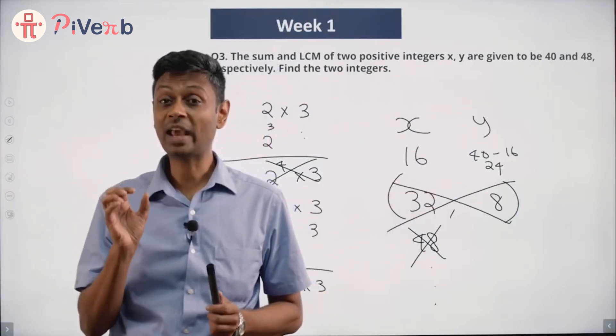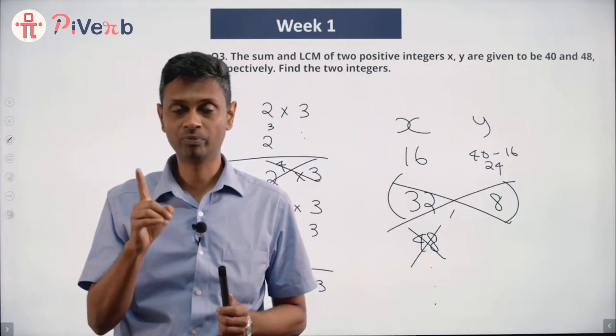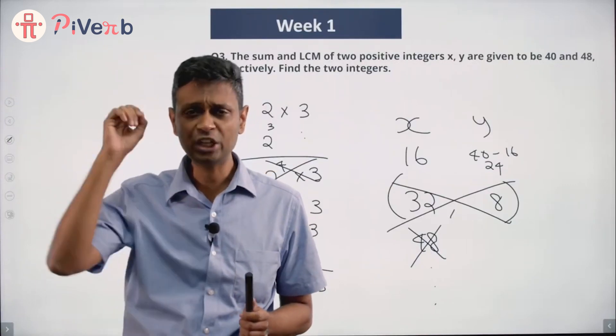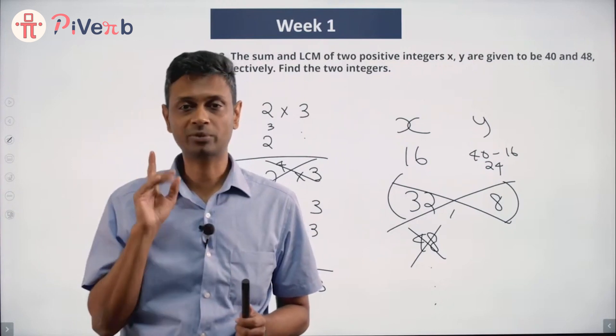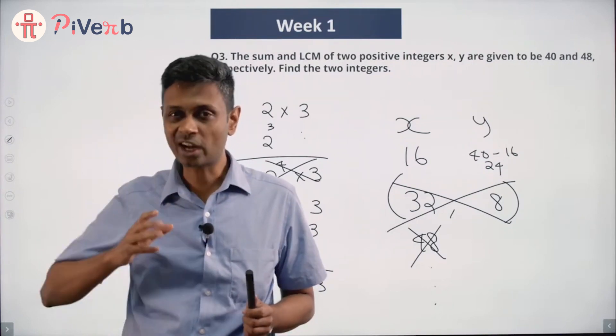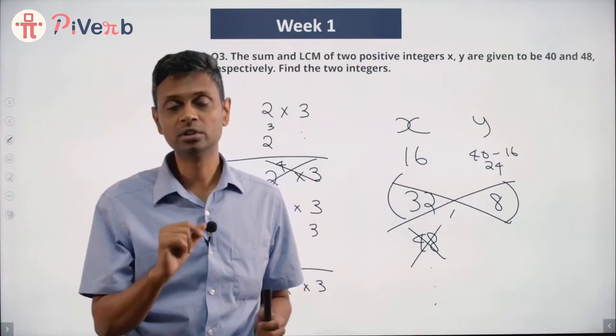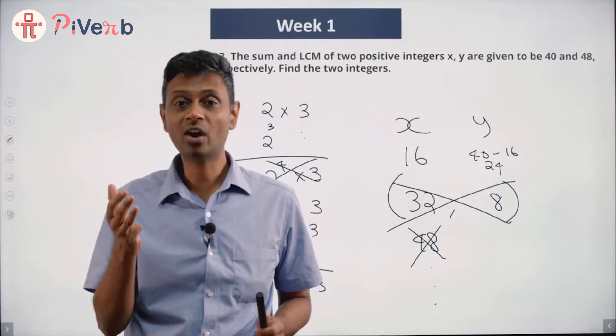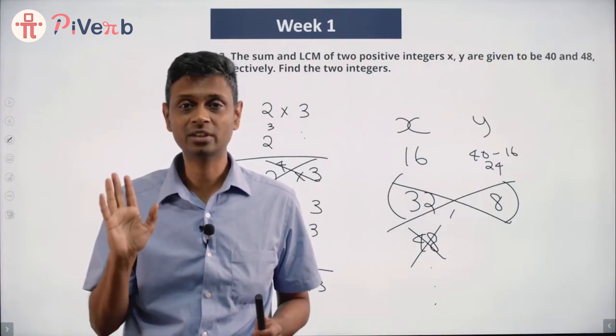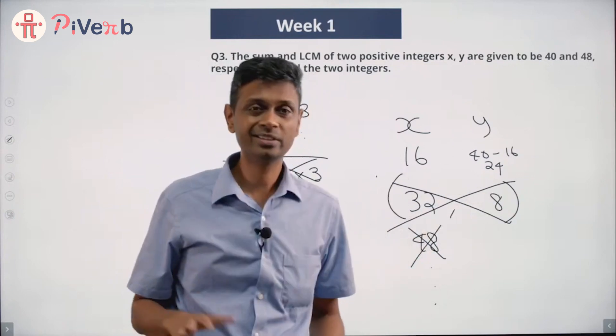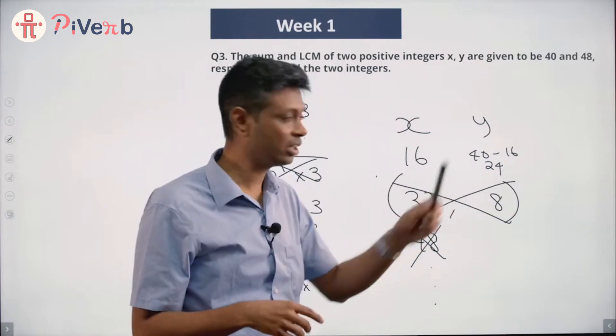Key thing here: LCM is 48, which is 2 to the power 4 into 3. At least one of the numbers should be a multiple of 3, and at least one should be a multiple of 2 to the power 4. 2 to the power 4 is a brilliant starting point. I have one of the two numbers to be a multiple of 16, whether it be 16 or 32. It cannot even be 48. 32 and remaining does not work; 16 and remaining works.